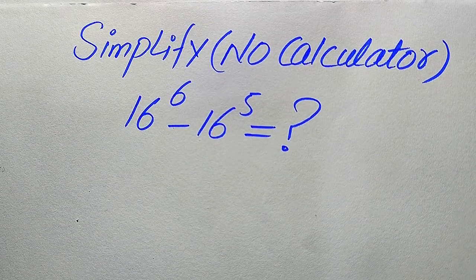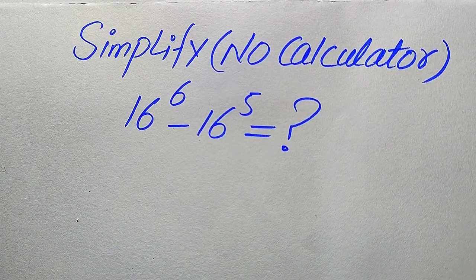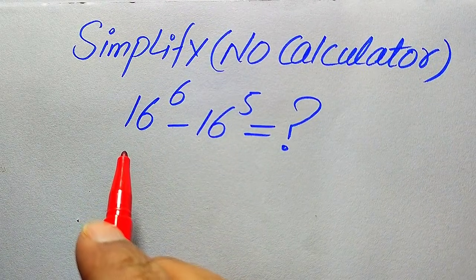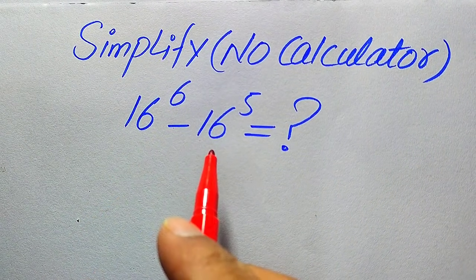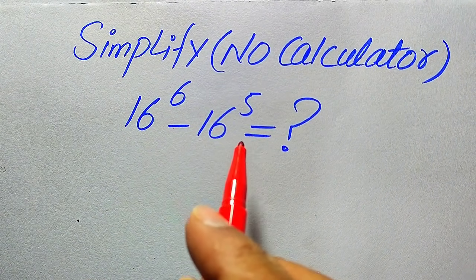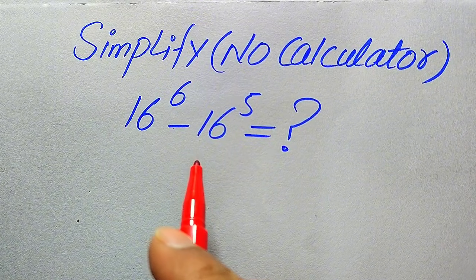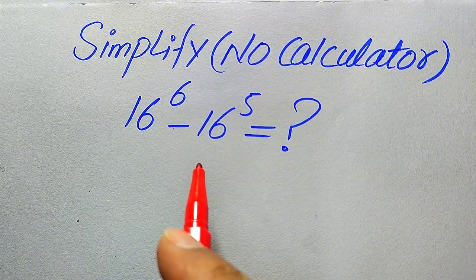Hello everyone, welcome. Simplify this algebraic expression without using a calculator: 16 to the power of 6 minus 16 to the power of 5. We need to write this algebraic expression in its simplified or lowest form.